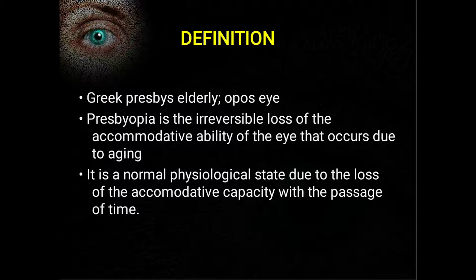The word 'presby' means elderly and 'opia' means eye — broadly, as we grow older our vision becomes less. That is one way to define presbyopia. The scientific definition is: presbyopia is the irreversible loss of accommodative ability of the eye that occurs due to aging.